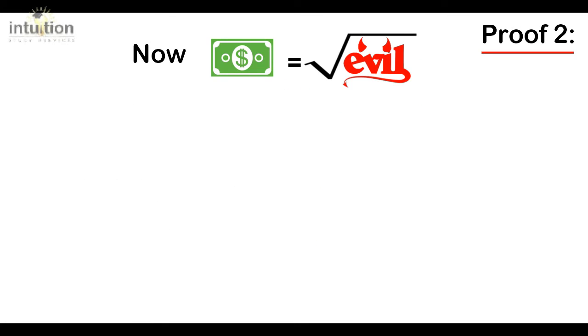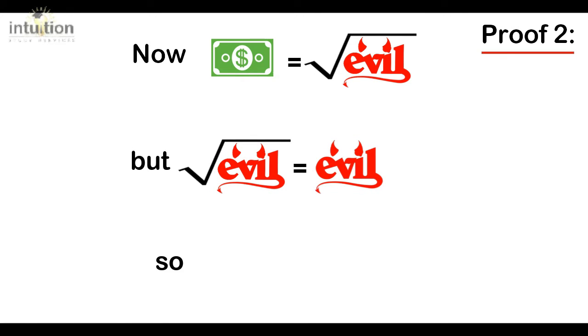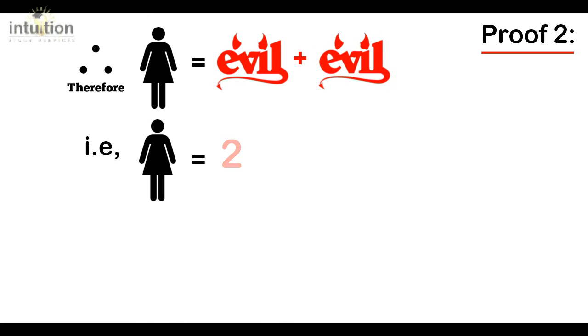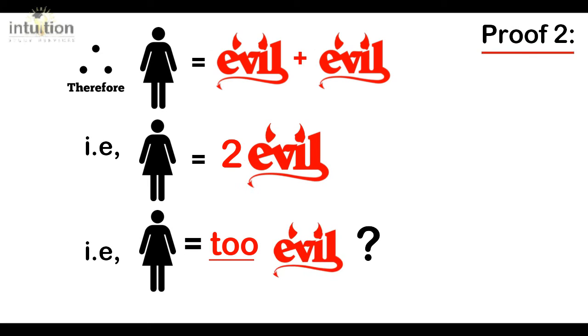Now money is still the root of all evil. But who are we kidding? The root of all evil is just evil. So that would make money equals evil. So therefore, if we make the substitution, girls equal evil plus evil or girls equal two evil. So does that mean girls are two evil instead of just evil?